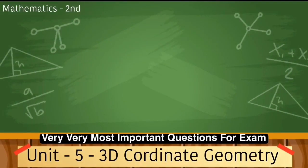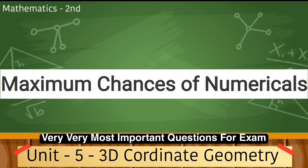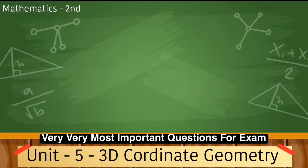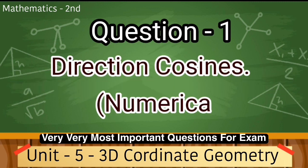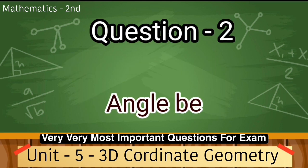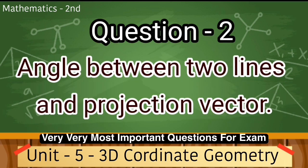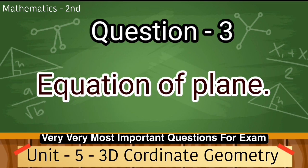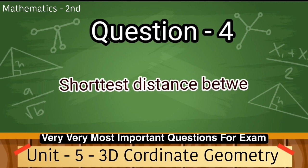Number five unit, jiska naam hai 3D coordinate geometry. Is unit mein aapko maximum chances of numericals milenge. Ismein chaar important questions hain. Number one question: Direction cosines. Number second question: Angle between two lines and projection vector. Number third question: Equation of plane. Number fourth question: Shortest distance between two lines.